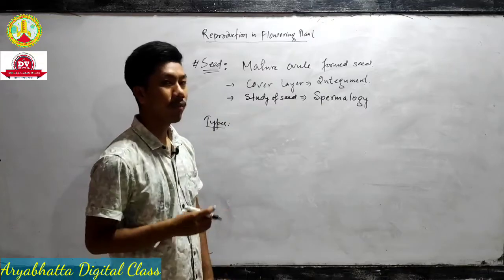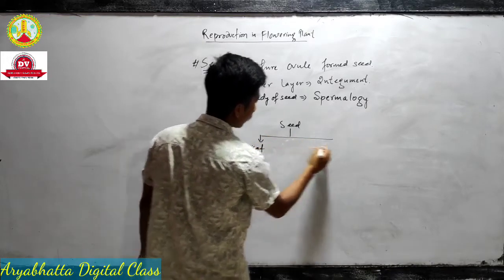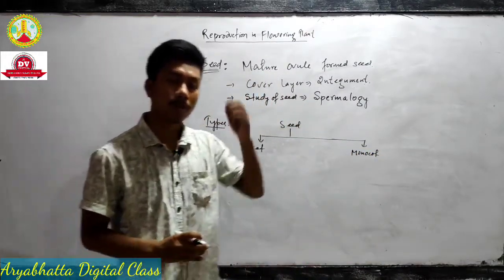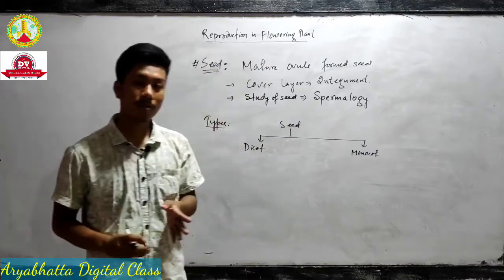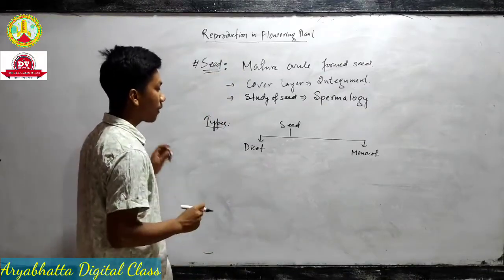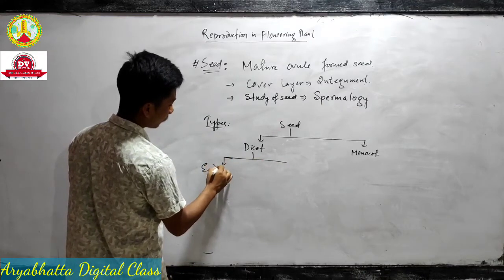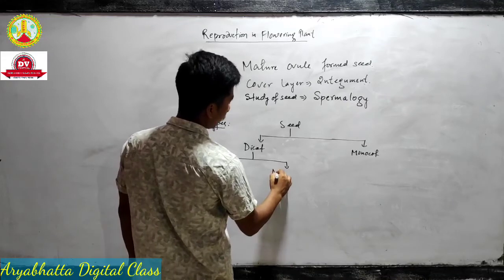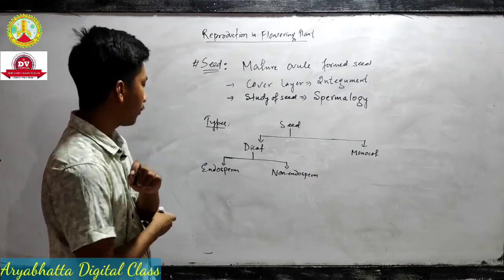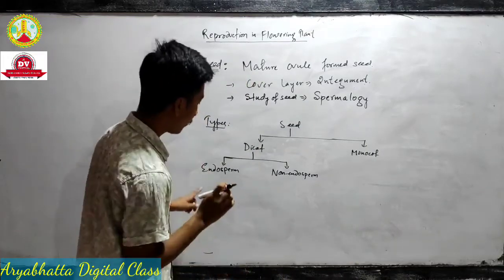The types of seed — again we have already discussed this in first year so we are doing a revision. Seed types in case of dicot and monocot are classified into two types: endospermic and non-endospermic. This classification applies for monocot as well — endospermic and non-endospermic.